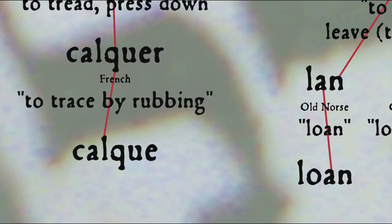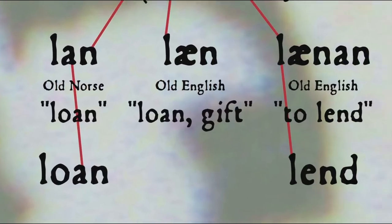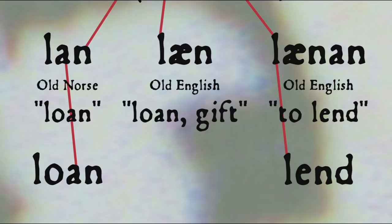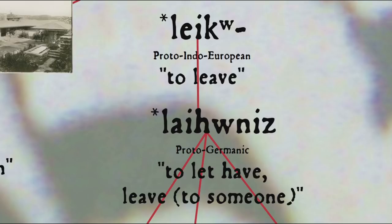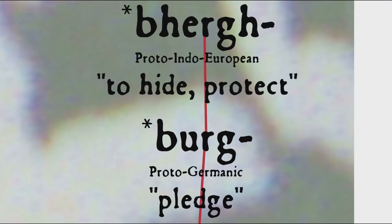Ironically, loanword is a calque of German Lehnwort, and calque is a loanword from French. The word loan comes from Old Norse lán, related to Old English lǣn, 'loan, gift,' and lænan, 'to lend,' giving us the modern word lend — all from Proto-Germanic *laihwiz, originally meaning 'to let have, to leave to someone,' from Proto-Indo-European *leikw, 'to leave.' And the word borrow comes from Old English borgian, originally 'to lend, be surety for,' but shifted from the giving part to the taking part of the transaction, from the notion of collateral given as surety, from Proto-Germanic *burg, 'pledge,' from Proto-Indo-European *bhergh, 'to hide, protect.'